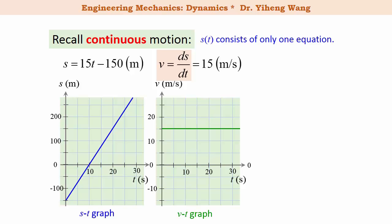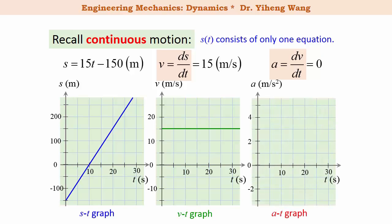Lastly, we differentiate again and get acceleration a equals dv/dt, which is a constant 0. We can graph this constant function and get the a-t graph, which shows how acceleration changes with time. In this case, acceleration is 0 at any time.